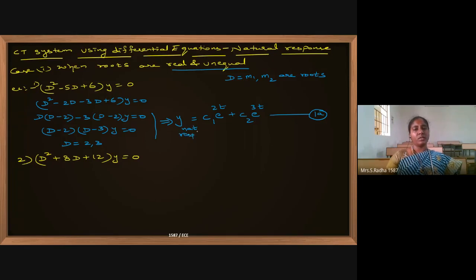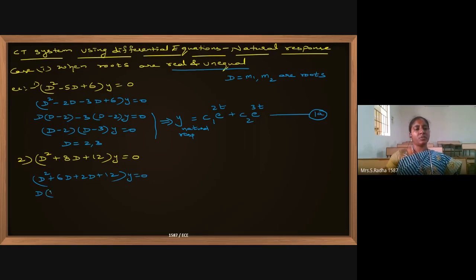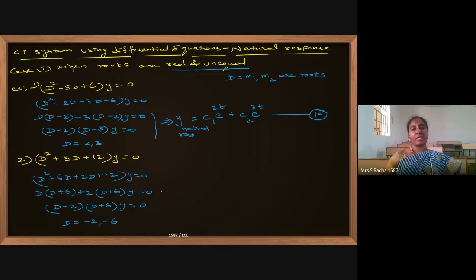Homogeneous solution, natural response, and free response are all the same. For the second question: 6(D+2)(D+6)y = 0 expands to (D² + 8D + 12)y = 0, which factors as (D+2)(D+6)y = 0, giving D values of minus 2 and minus 6 — these are m1 and m2.